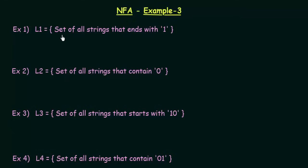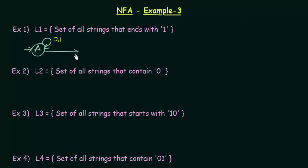Coming to the first one, L1 is the set of all strings that ends with 1. I start with the starting state which I will call state A. A is my starting state and A on getting input either 0 or 1 stays in A itself. But if the final input that I get is a 1, then A goes to the final state which is state B. When it ends with 1 it is accepted.